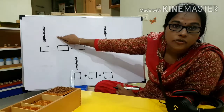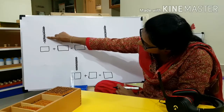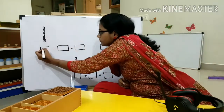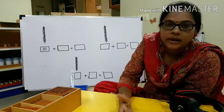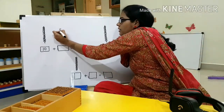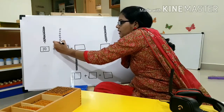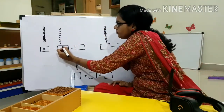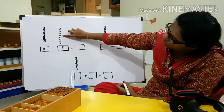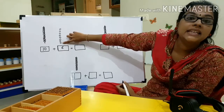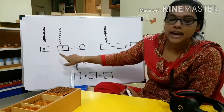What is this? This is a bar of 10 — 1, 2, 3, 4, 5, 6, 7, 8, 9, 10. Now 1, 2, 3, 4, 5, 6, 7, 8 — which is nothing but 10, 11, 12, 13, 14, 15, 16, 17, 18. Ten and 8 makes 18.